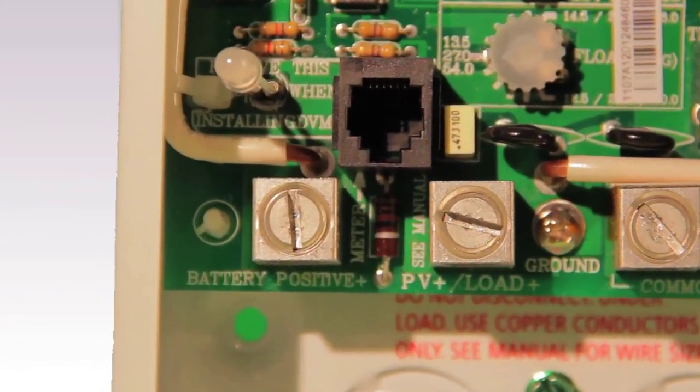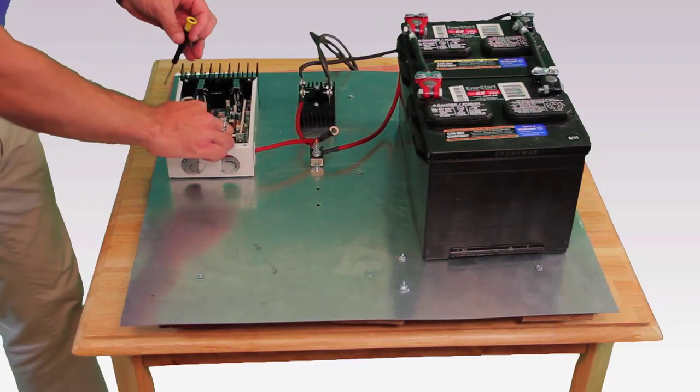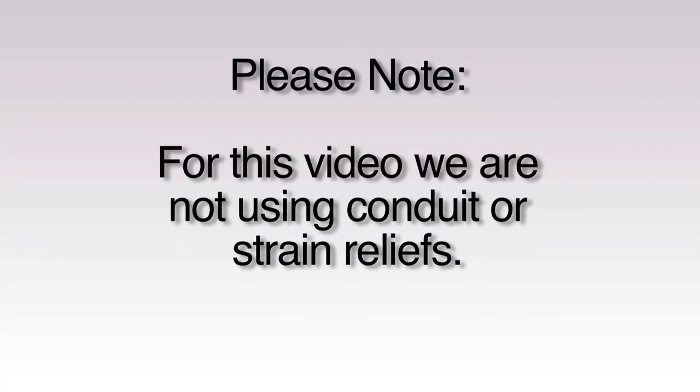Find the terminal for battery positive and connect a stranded six gauge red wire. Also please note that for this video we are not using conduit or strain reliefs over our wires. Conduit and strain reliefs are very important for the protection of your wires coming into and out of your DC controller.